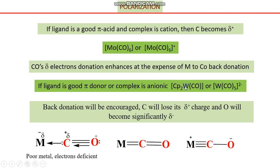When electron density is increased on tungsten, the electron density shifts toward carbon. As a result, the partial positive character of carbon decreases, and the electrophilicity of this carbon center decreases as well — it moves toward being a nucleophilic center. Additionally, since the metal possesses negative charge, it is an electron-rich species, further reinforcing this effect.